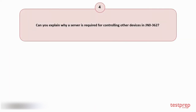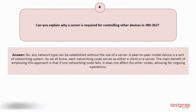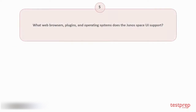Question number four: Can you explain why a server is required for controlling other devices in JN-0362? Your answer is: No, any network type can be established without the use of a server. A peer-to-peer model device is a sort of networking system. Each networking node serves as either a client or a server. The main benefit is that if one networking node fails, it does not affect the other nodes, allowing for ongoing operations.